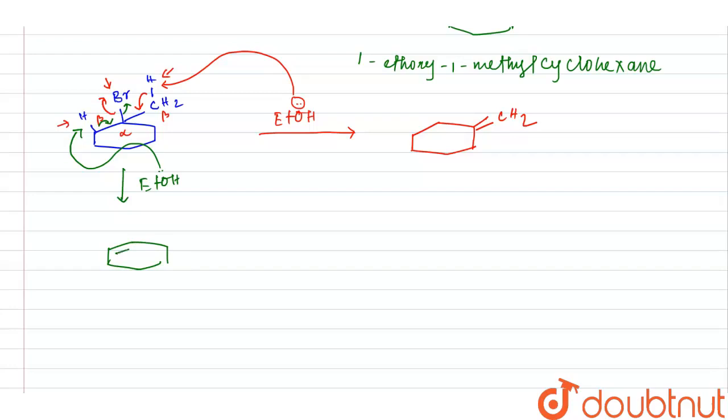Now name of this product is methylcyclohexene and name of this product is 1-methylcyclohexene.